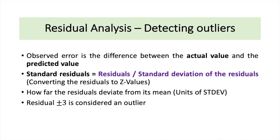What is the rule of thumb to detect an outlier? An outlier will be if the standard residual is plus or minus 3 and above — then we say it's an outlier.